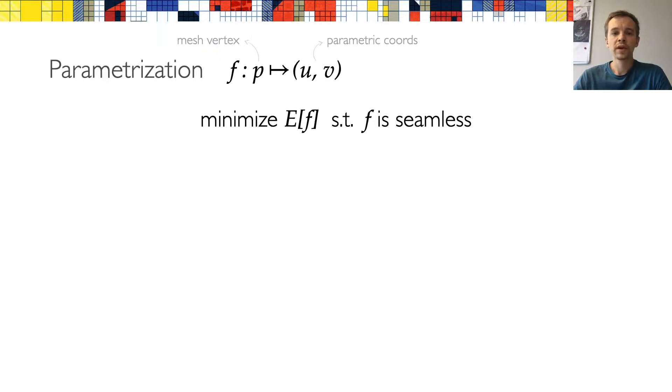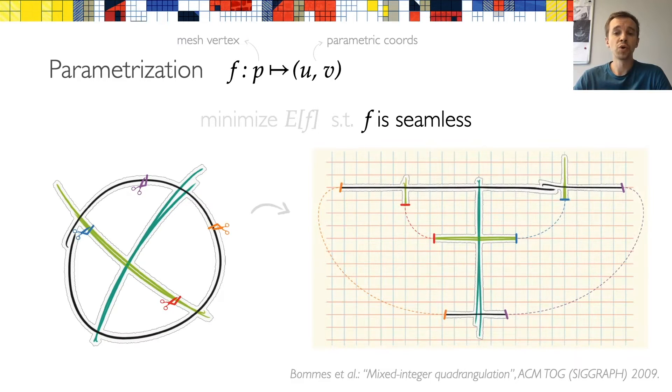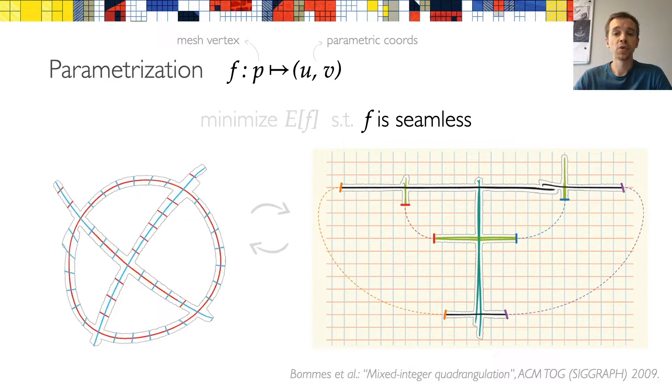Once we have the frame field, we can compute the parameterization, which we do by minimizing an energy, while respecting the hard constraint that the parameterization is seamless. Let's have a look at what that means. The constraint that f is seamless is necessary, since in order to compute a global parameterization, the mesh needs to be cut open into disk topology. And we need to make sure that the parameterization satisfies the so-called transition functions at the cuts. I won't go in too deep on how this is done, since we follow common practice, so please refer to the paper in case you want more details.